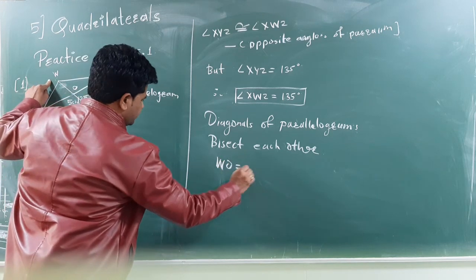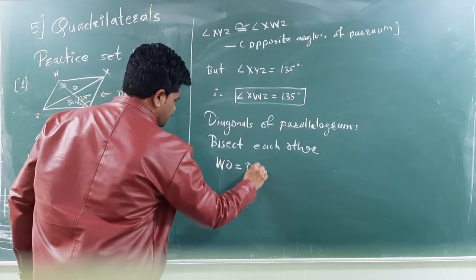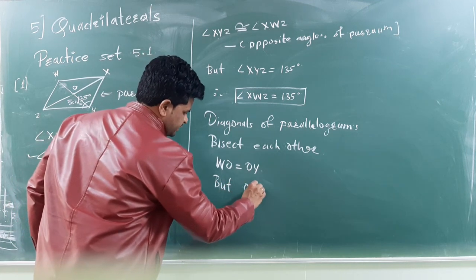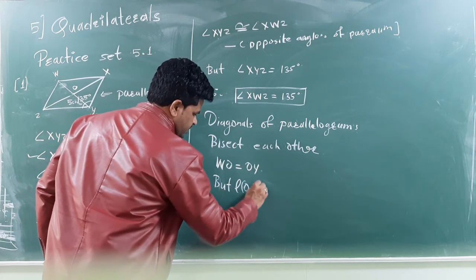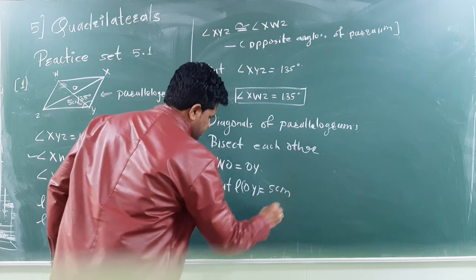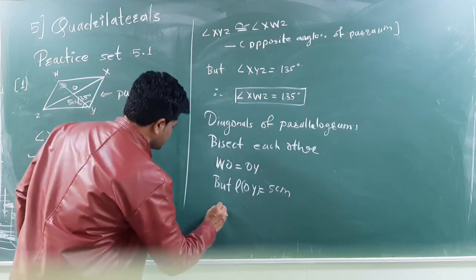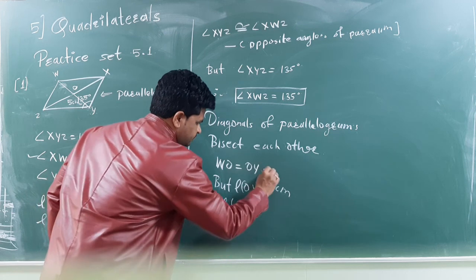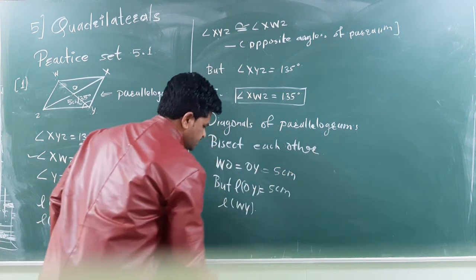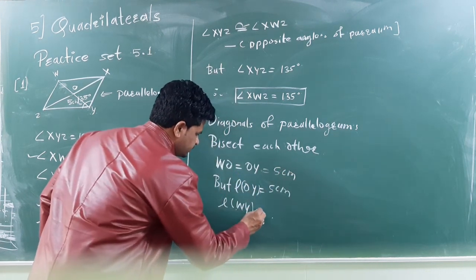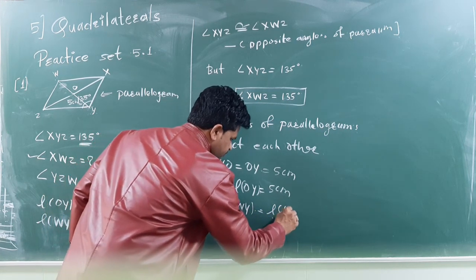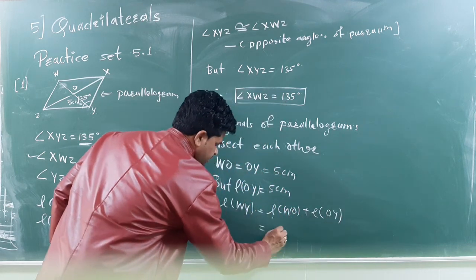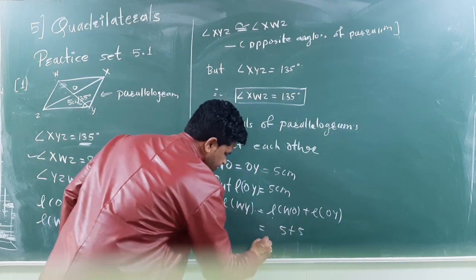We can write here, WO will be equal to OY. But, we know here, OY is equal to, length of OY is equal to 5 cm. That is why, length of WO will also be 5 cm. That time, we can write as, WY is equal to length of WO plus length of OY. This will be, 5 cm plus 5 cm.